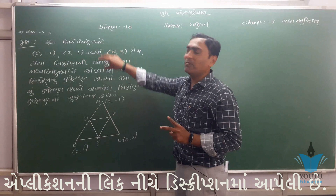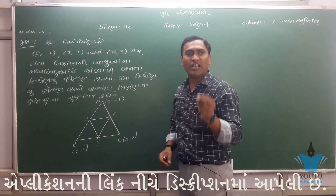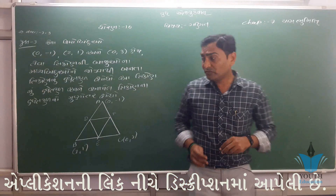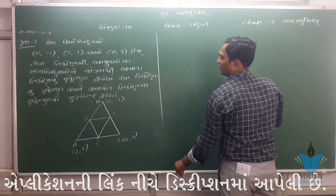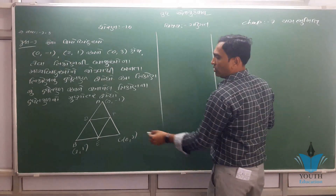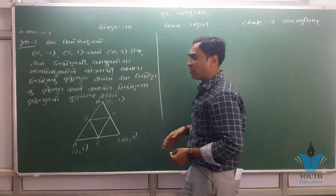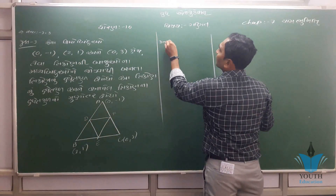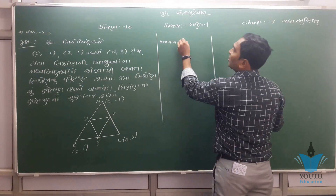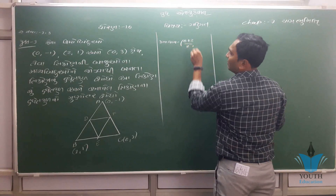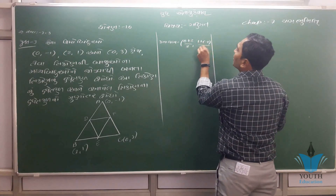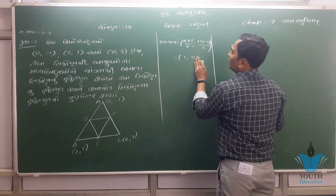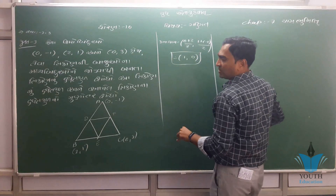મોટા ત્રિકોણનું ક્ષેત્રફળ અને ત્યાર પછી નાના ત્રિકોણનું ક્ષેત્રફળ. અને જરૂરી લાગ્તું ને જરૂરી લાગ્તું નથી. ABCનું મધ્ય બિંદુ. છેલ્લે નાયાં, બંને નાયાં. એકશી આ મૂળ ત્રિકોણ DEF. એટલે 0 વત્તા 2, છેદમાં 2. એ ત્રિકોણ D= 0, E= 1.